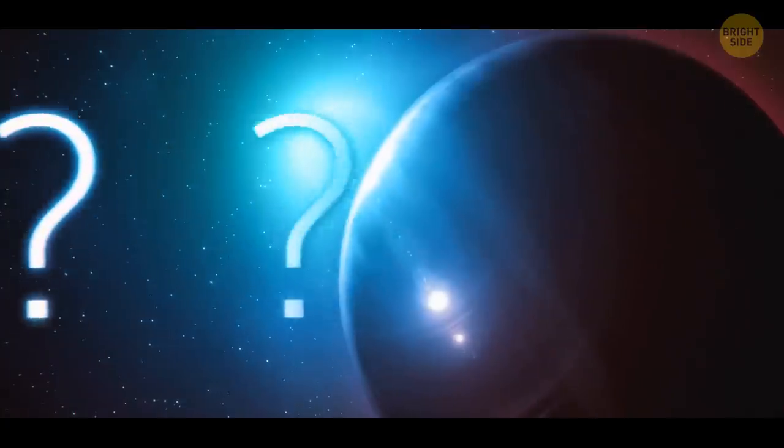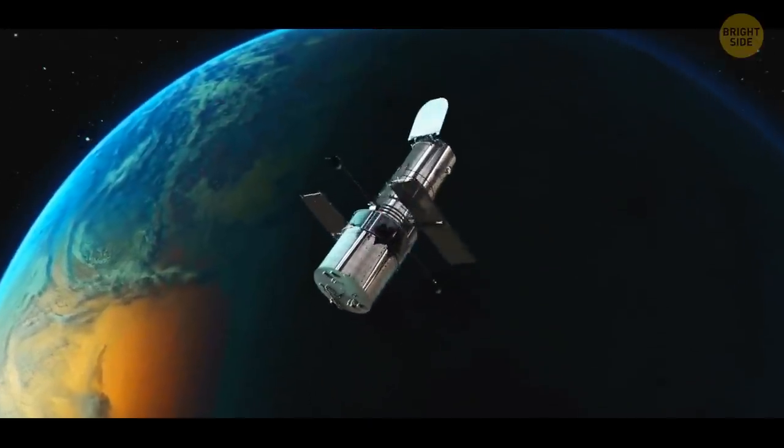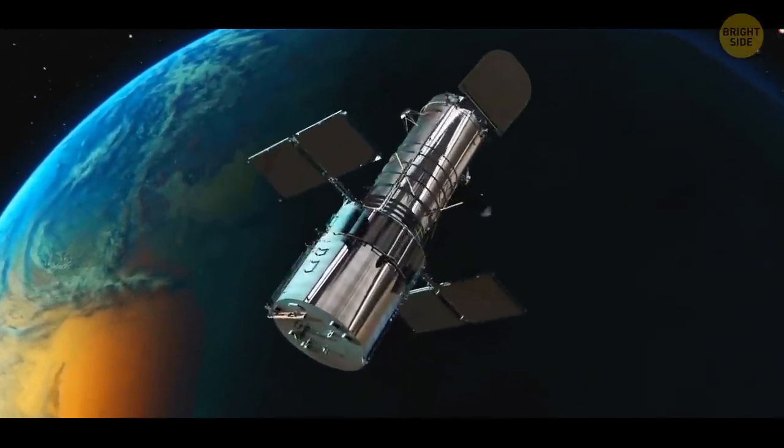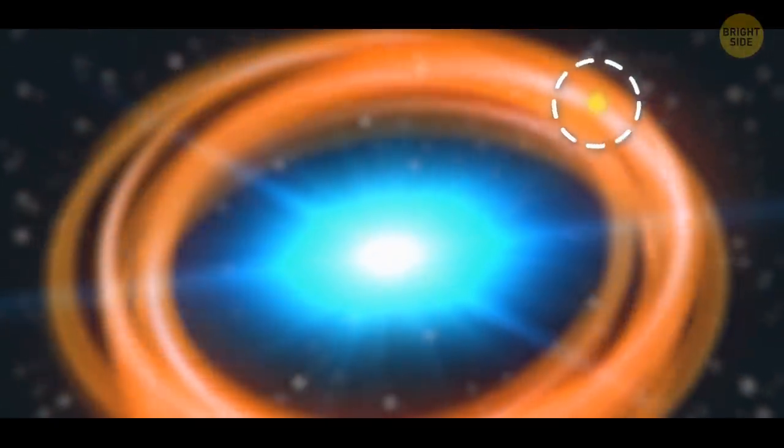So, what happened to that planet? Basically, the Hubble took a photo of the whole star system. But since it's so far away, the photo came out kind of blurry. Scientists just saw a large yellow dot and assumed it was a planet.